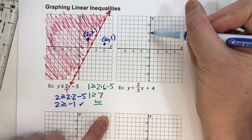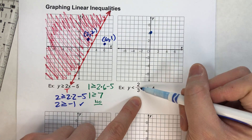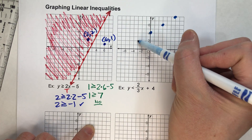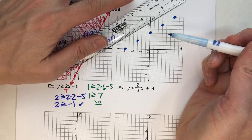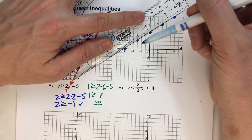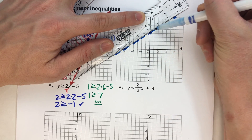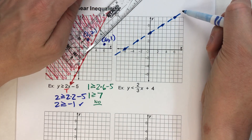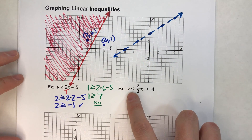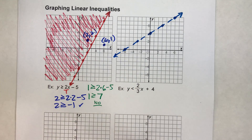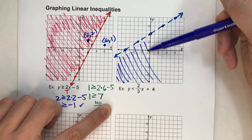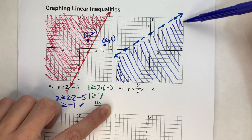Y is less than 2 thirds x plus 4. My y-intercept is 4. My slope is 2 thirds, so up 2, right 3. Up 2, right 3. And continuing the other way: down 2, back 3. So here's my line. Y has to be less than — not or equal to, just less than — so I'm going to put a dashed line here. That represents that points on this line are not solutions. It has to be less than the line, meaning any point below this line. So this area is our solution.